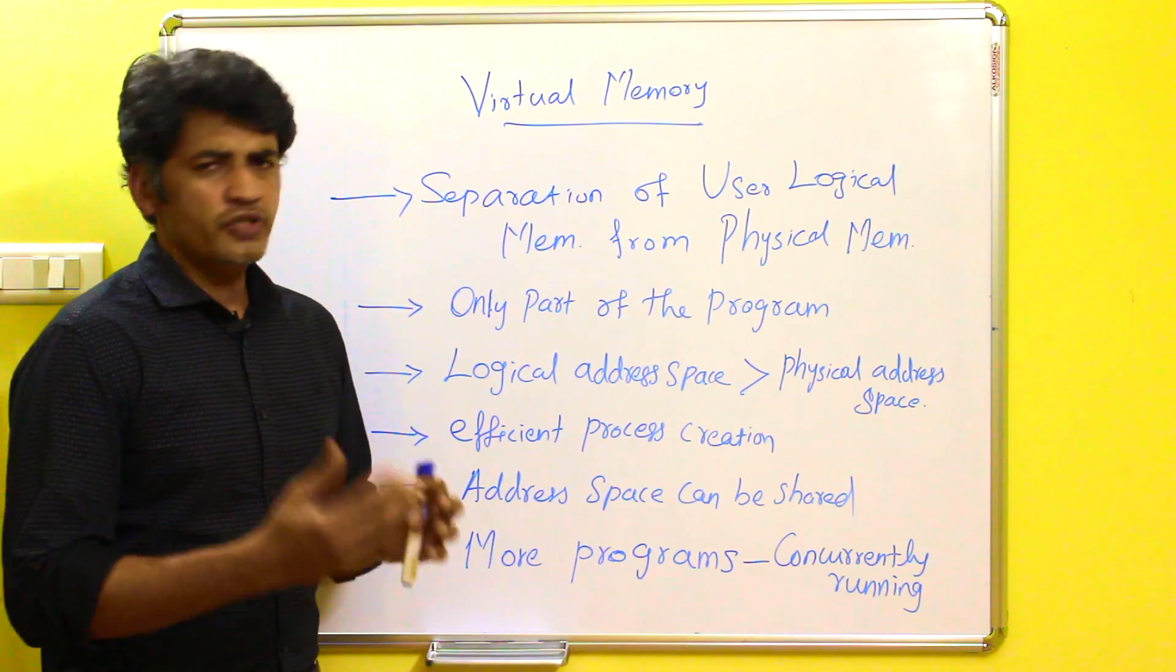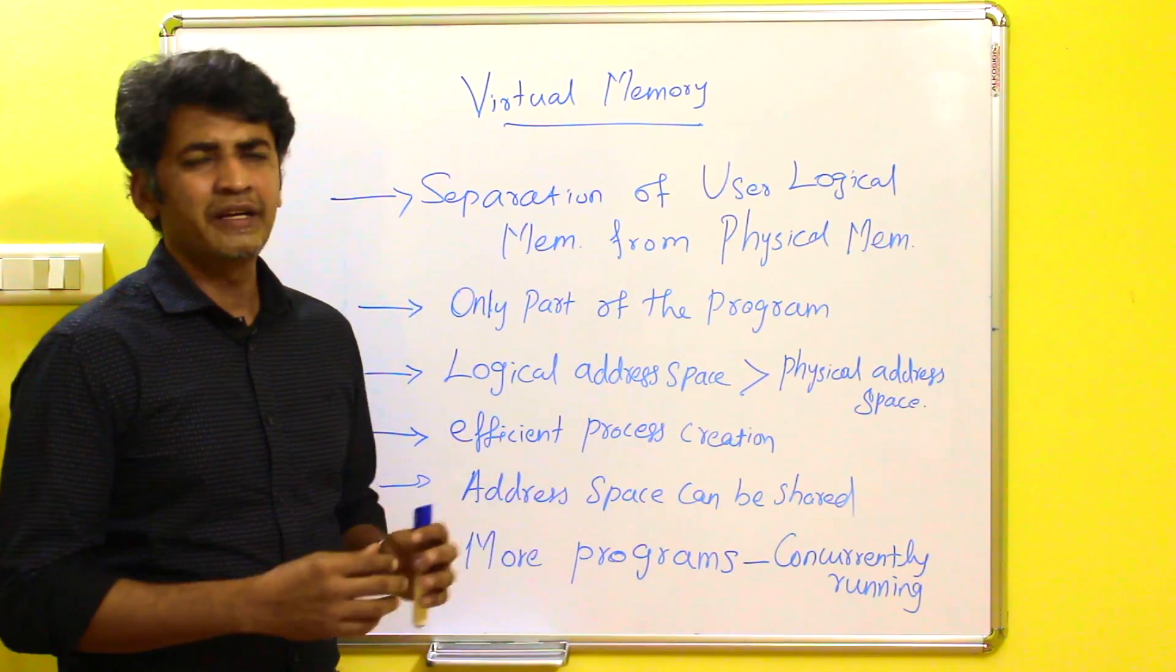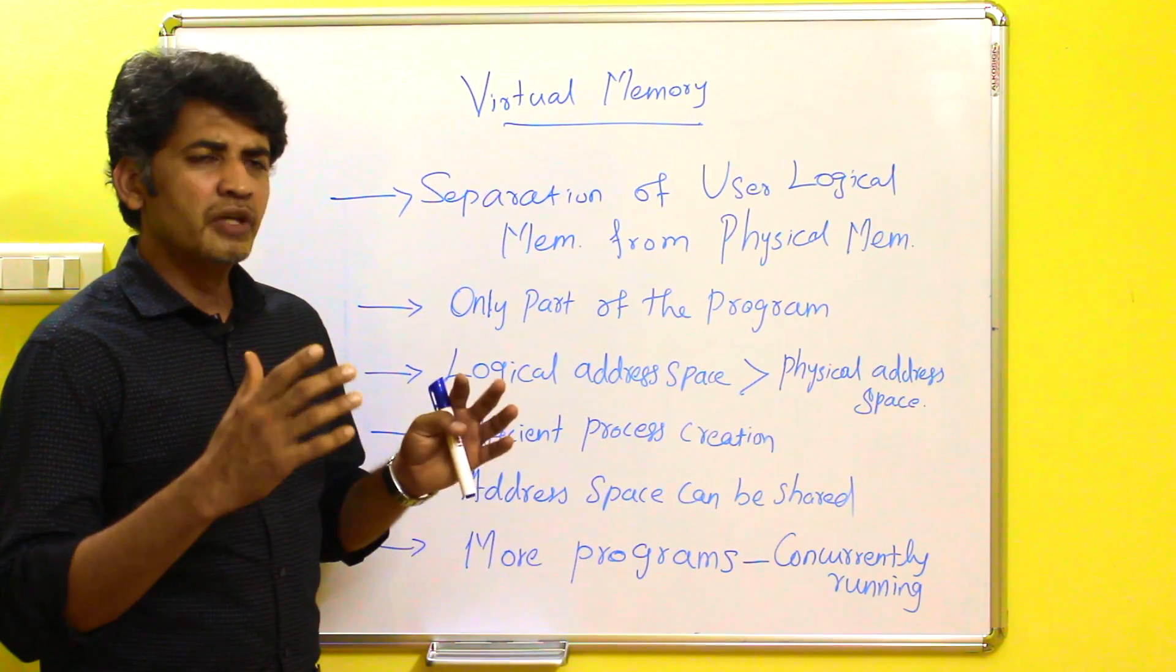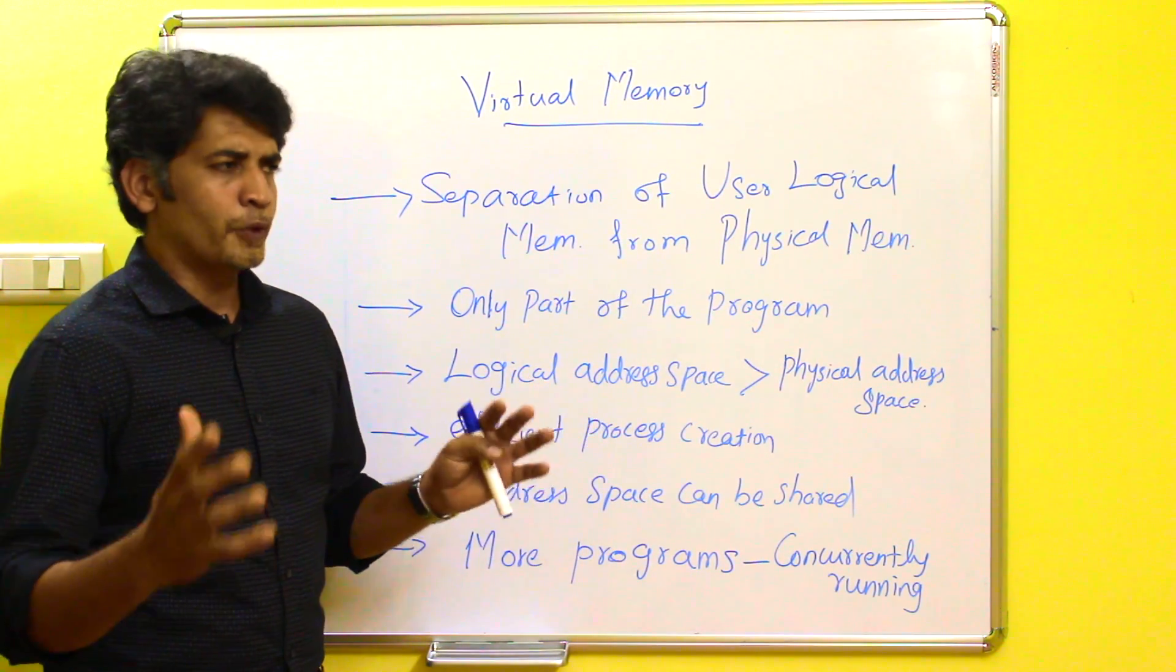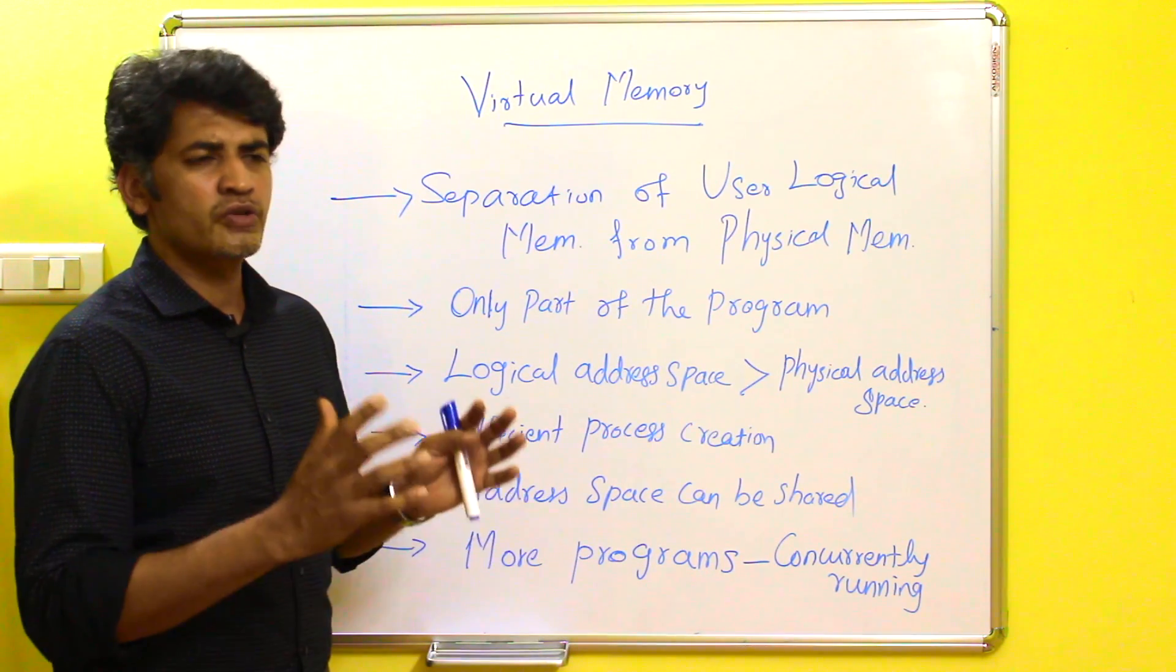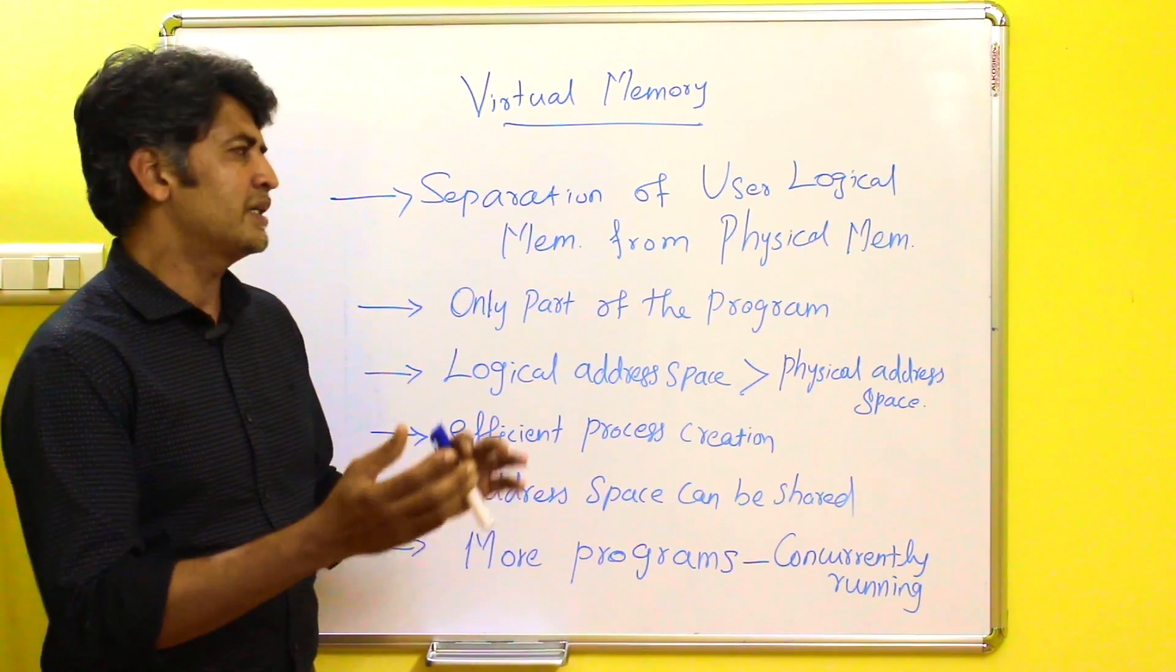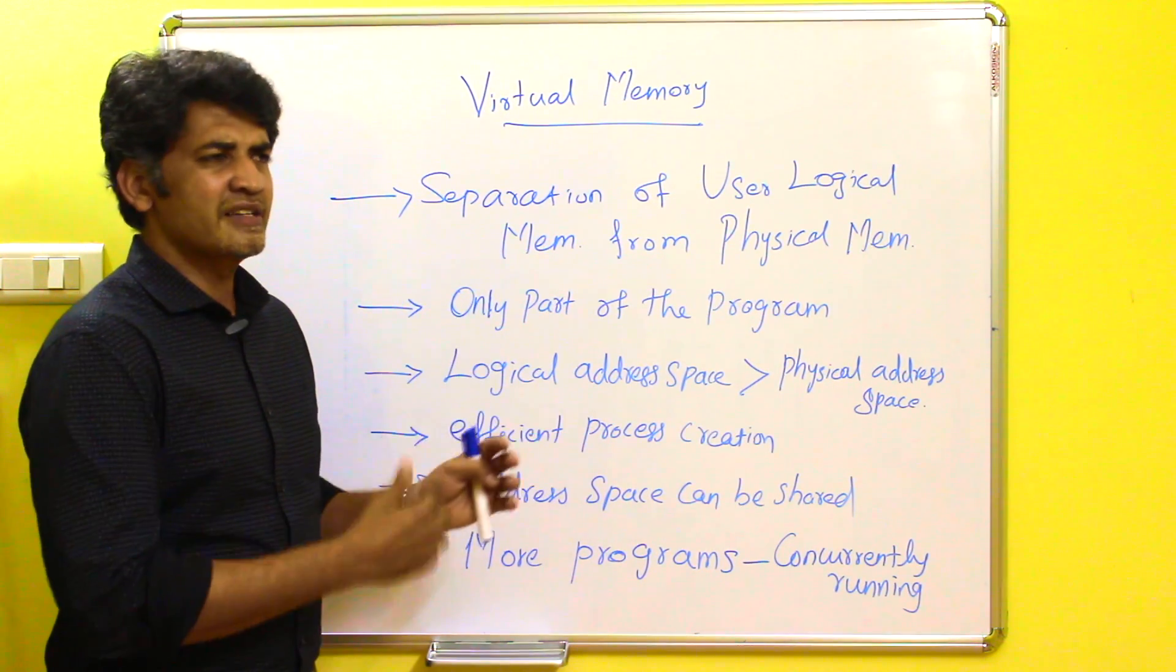For example, if you are taking a process execution, the process execution needs a certain amount of memory from the physical memory. But if the physical memory is not able to accommodate the whole process for the execution, to start the process execution, some of the required part will be transferred to the physical memory then it will start the execution.